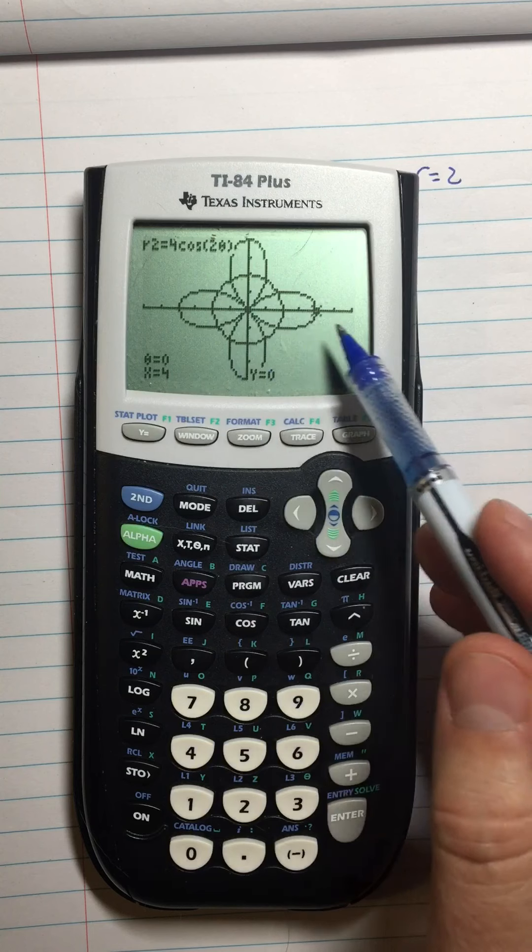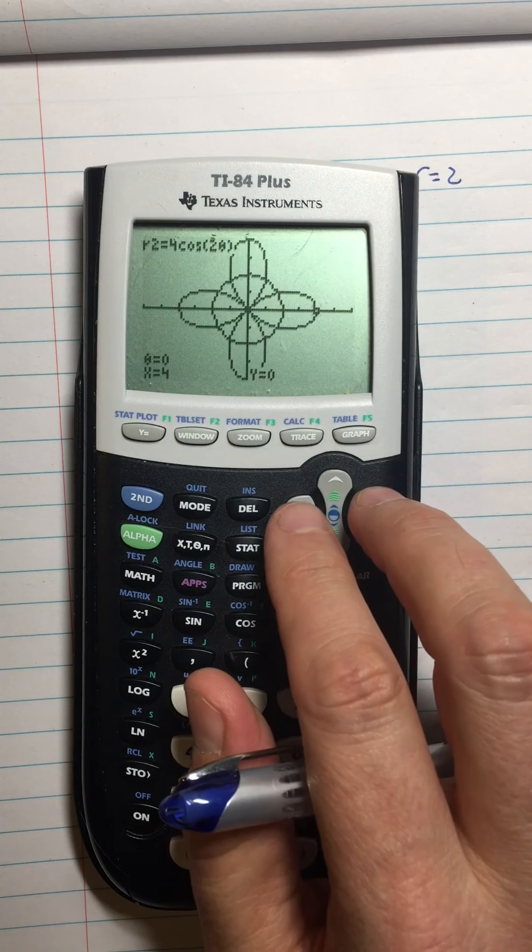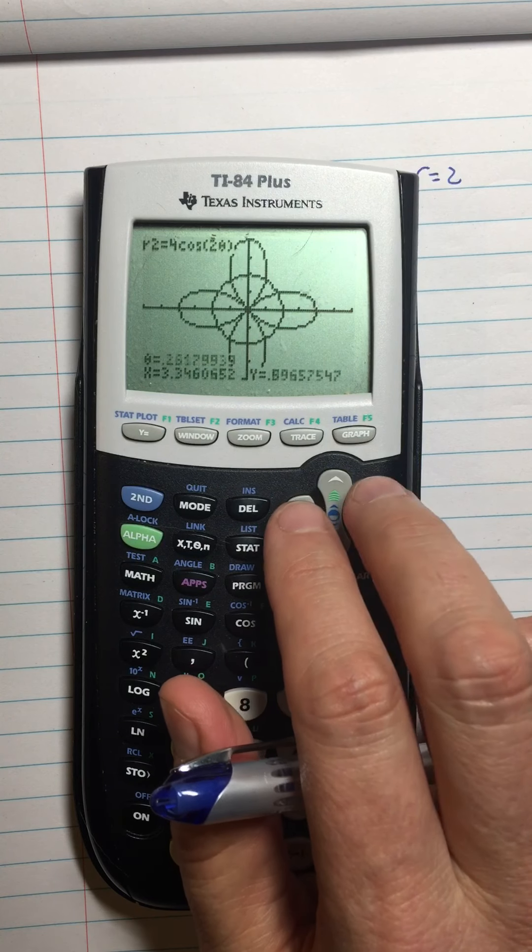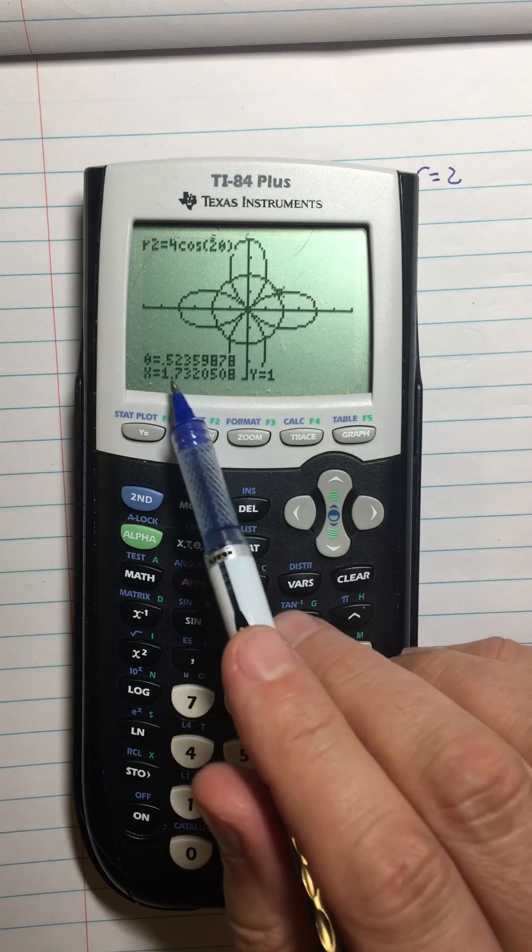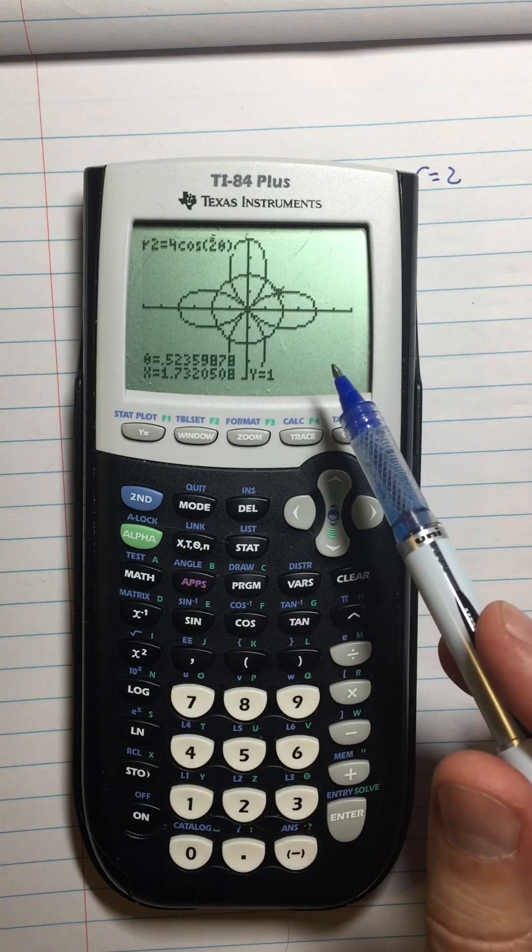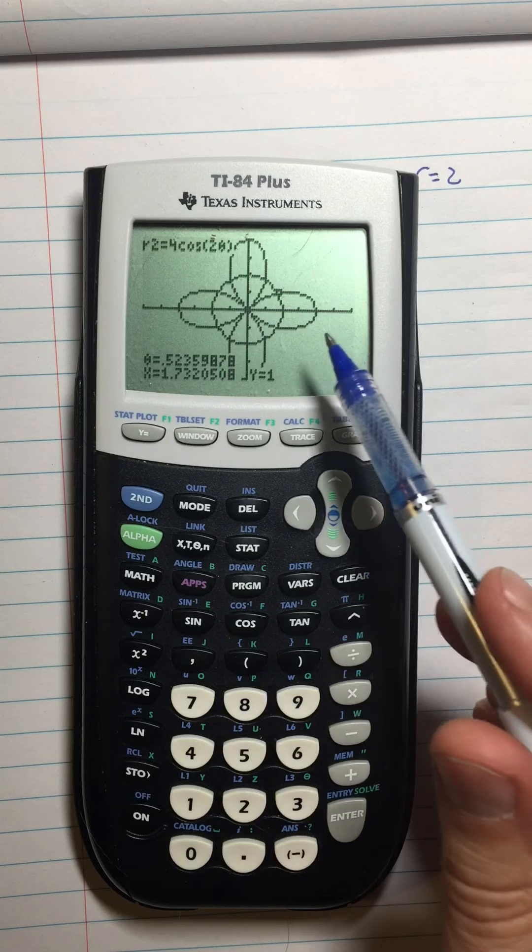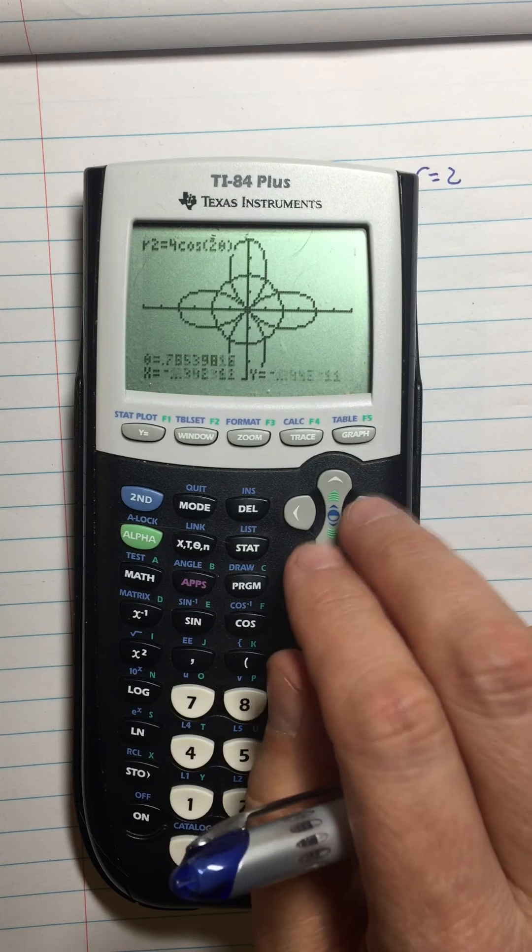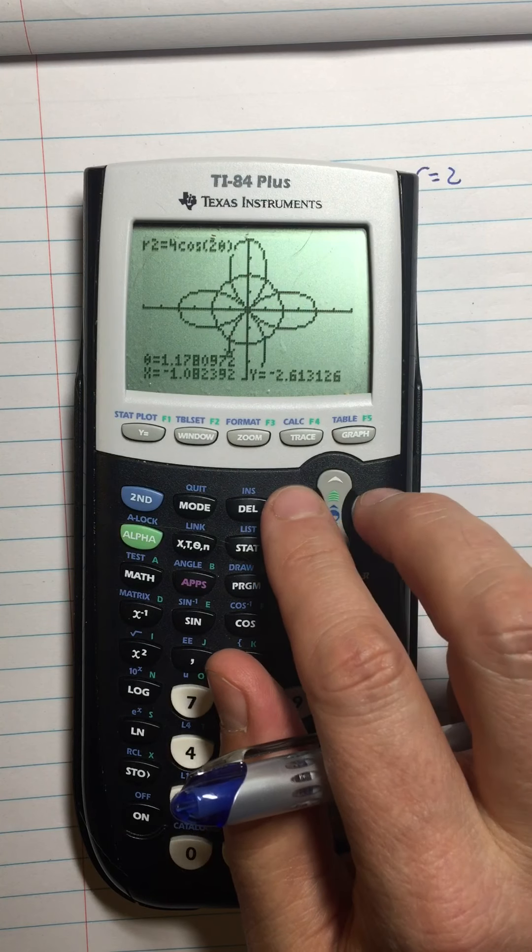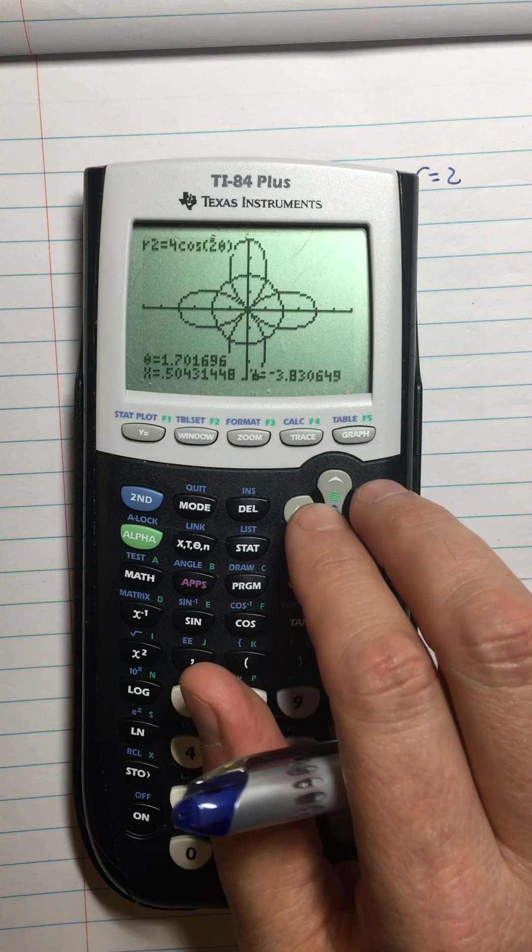That's how I figured out that theta equals zero is this point right here on the rose. Then where is the point where they intersect? That's what I need to know. It's 0.523. I don't really know what to do with that, so I'm going to probably have to solve an equation. I'm lost in space here, where am I?